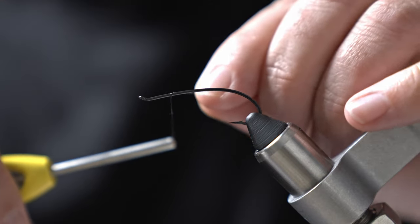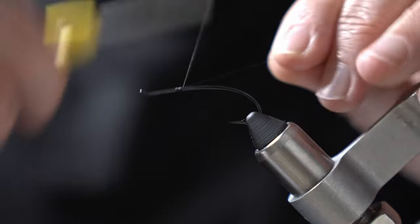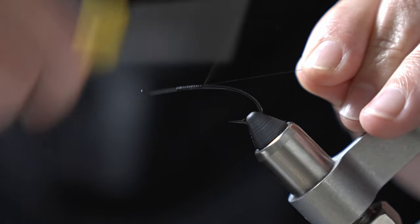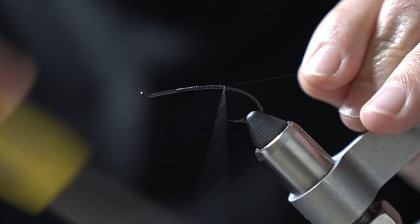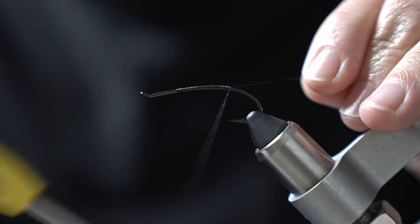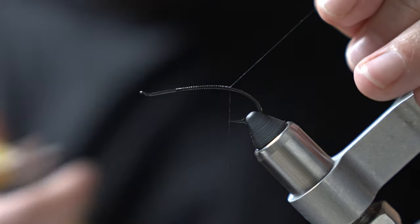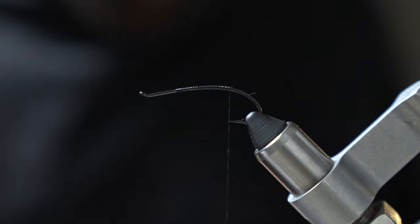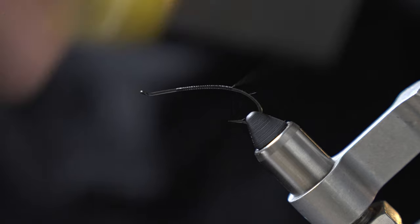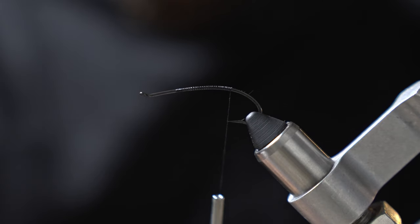Alright, so we're going to be tying this on an Alec Jackson spey hook. This is a size 5. You could certainly go smaller than this. This is about as big as I would tie one of these on. It's a little bit later in the fall season, so I kind of prefer these bigger sizes.